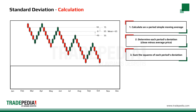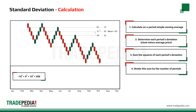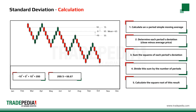Next, we sum the squares of each period's deviation: negative 10 squared plus 0 squared plus 10 squared equals 200. Divide this sum by the number of periods used — in our case, 200 divided by 3. Finally, we calculate the square root of this result and we get 8.16 as the standard deviation.